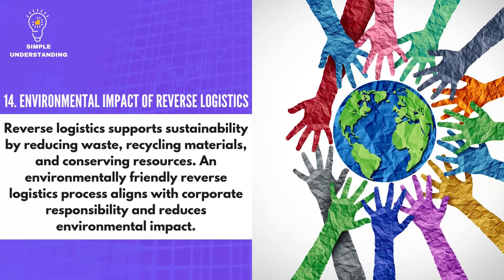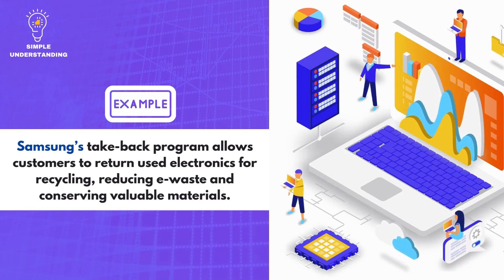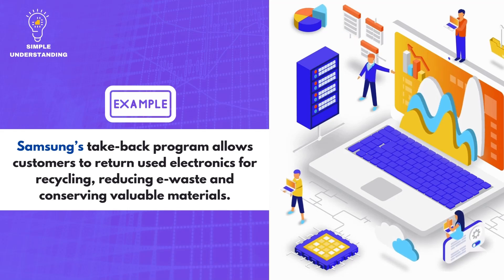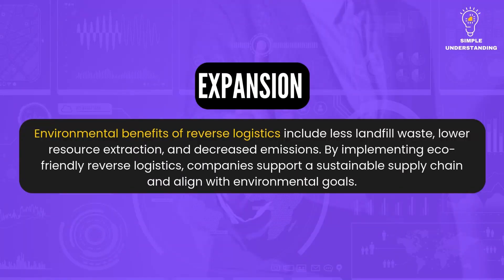14. Environmental Impact of Reverse Logistics. Reverse logistics supports sustainability by reducing waste, recycling materials, and conserving resources. An environmentally friendly reverse logistics process aligns with corporate responsibility and reduces environmental impact. Samsung's Take Back Program allows customers to return used electronics for recycling, reducing e-waste and conserving valuable materials. Environmental benefits of reverse logistics include less landfill waste, lower resource extraction, and decreased emissions, supporting a sustainable supply chain.